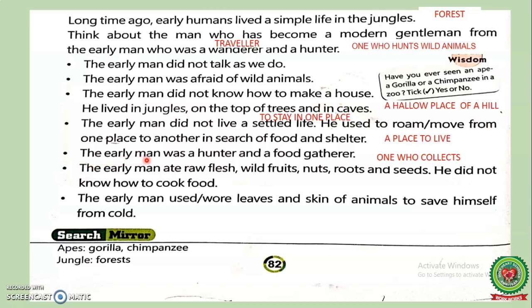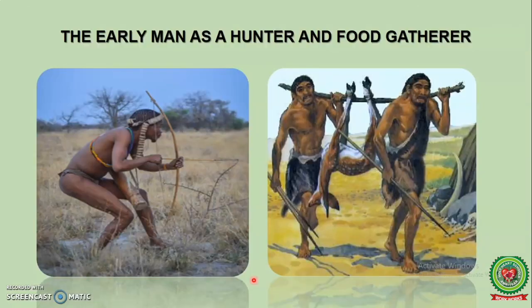The early man was a hunter and a food gatherer. Underline 'gatherer' — write its meaning: 'one who collects.' The early man hunted wild animals for his food. He also moved from one place to another to collect food.